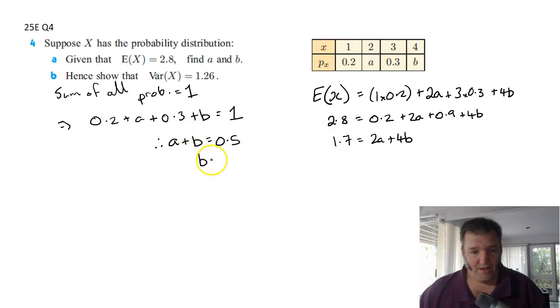Let's let b equals 0.5 minus a, and I'm going to substitute that into the other one. So this is my equation one and this one I'm going to label equation two. So we say something like let b equals 0.5 minus a, or sub b equals 0.5 minus a in equation two.